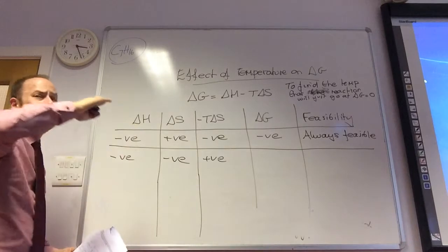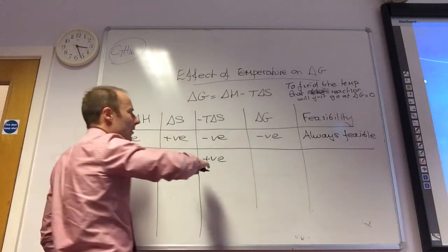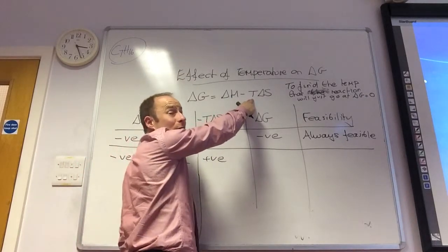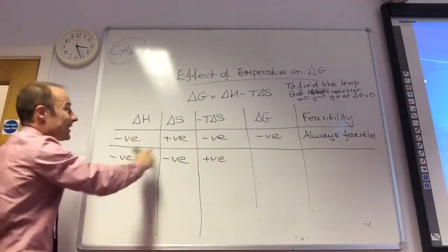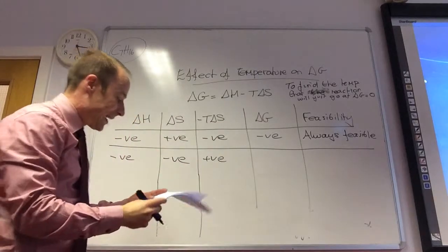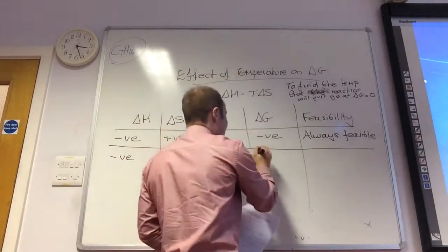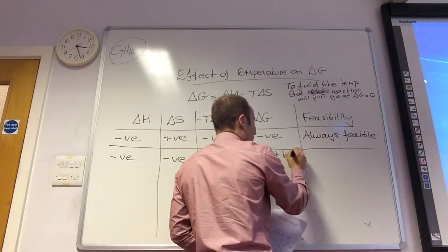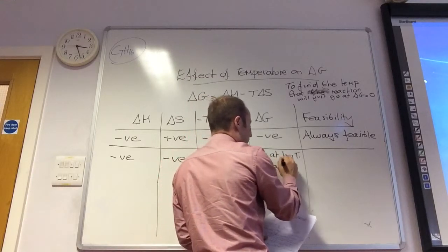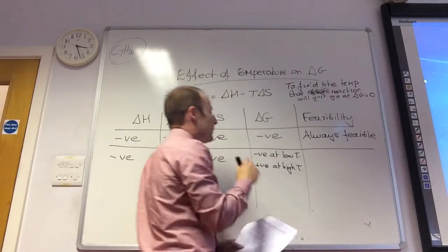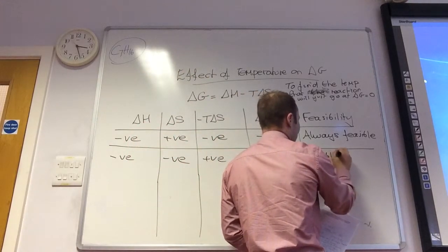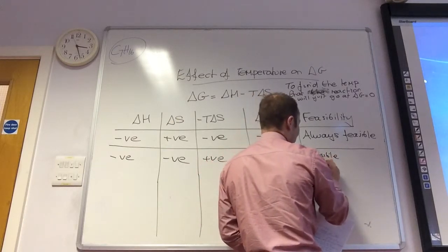I want delta G to be negative. However, I want this value — minus T delta S — to be small, because delta H is negative, so I want this positive figure to be small. Therefore I want temperature to be low. So delta G is going to be negative at low T, and positive at high T, which means low temperature is feasible, and at high T it is not feasible.